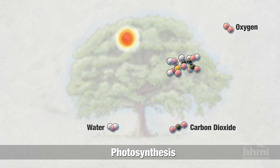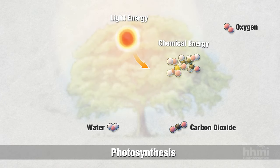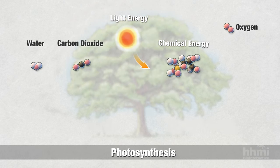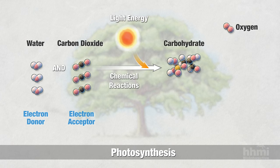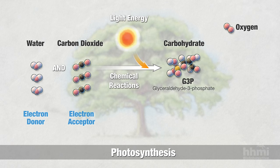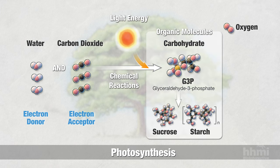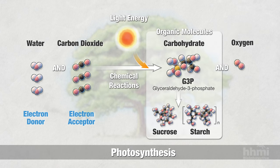Photosynthesis is a set of chemical reactions in which light energy is converted to chemical energy. Light energy enables the movement of electrons from molecules that donate electrons to molecules that accept electrons. Water is the first electron donor. The carbon in carbon dioxide is the ultimate electron acceptor. Carbon dioxide combines with other molecules to form carbohydrates, such as a three-carbon sugar called G3P. Carbohydrates are used to make other organic molecules that plants use to grow and as a source of energy to fuel their lives. An important byproduct of photosynthesis is oxygen.